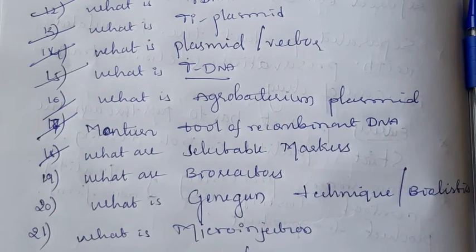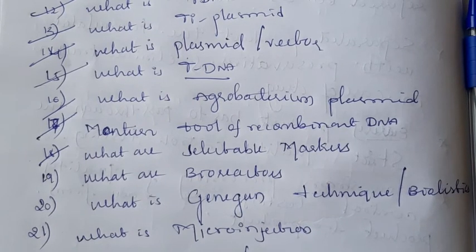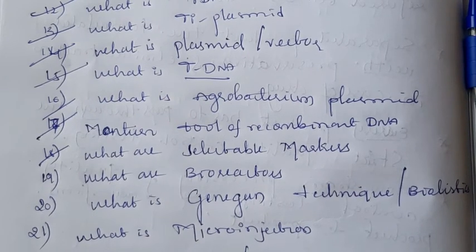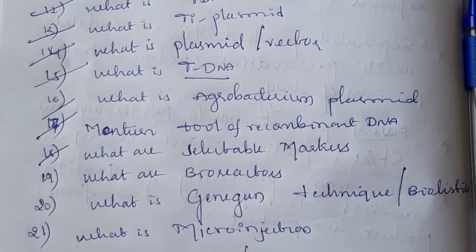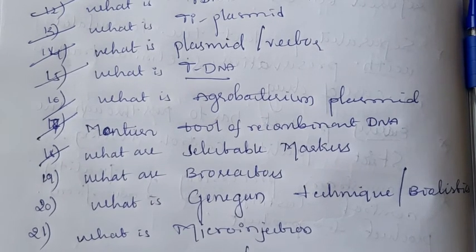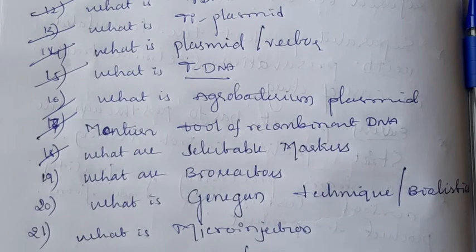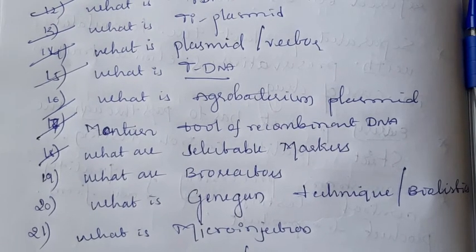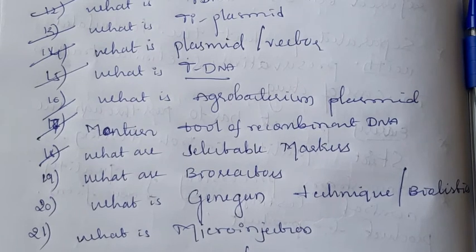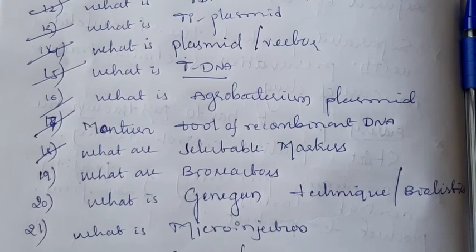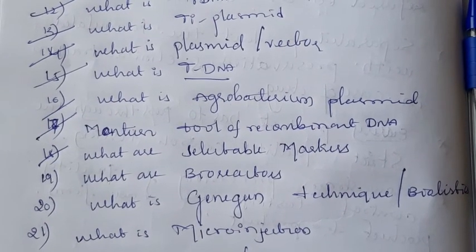Next question: what is microinjection? Microinjection is also one of the techniques of insertion of a gene of interest into the host. Microinjection uses a small micropipette or injection that helps to insert the gene of interest directly into the nucleus of the host organism.